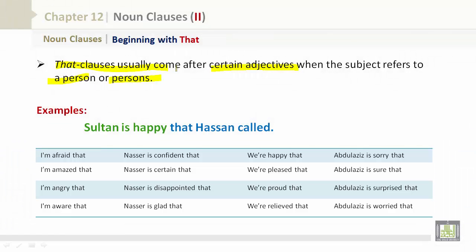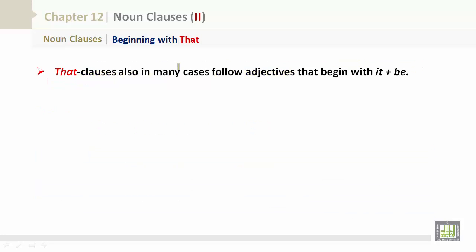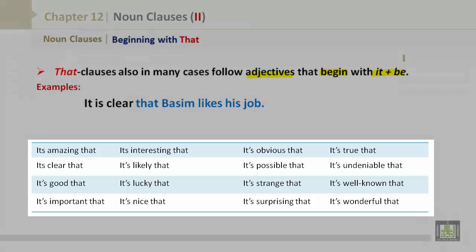That clauses also, in many cases, follow adjectives that begin with 'it' plus the verb 'be.' For example: 'It is clear that Bassem likes his job.' Other expressions include: it's amazing that, it's interesting that, it's obvious that, it's true that, it's likely that, it's possible that, it's undeniable that, it's good that, it's lucky that, it's strange that, it's well known that, it's important that, it's nice that, it's surprising that, and it's wonderful that.